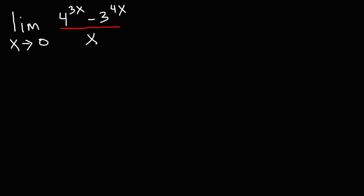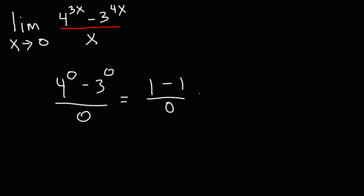We could start with direct substitution — let's replace x with 0. 3 times 0 is 0, and 4 times 0 is 0. Now, anything raised to the 0 power is 1, so 4 to the 0 is 1 and 3 to the 0 is 1. 1 minus 1 is 0, and 0 divided by 0 — we really don't know what that is. It could be 0, infinity, 5, or negative 8. We just don't know. So this is called indeterminate; we can't determine what it is.